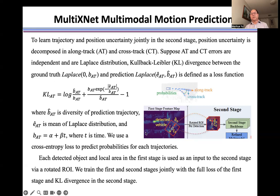Each detected vehicle together with the local feature map is rotated to the desired orientation and then given to the second stage as input. We use the full loss function in the first stage and the loss function in the second stage. We train the MultiXNet model in an end-to-end fashion.